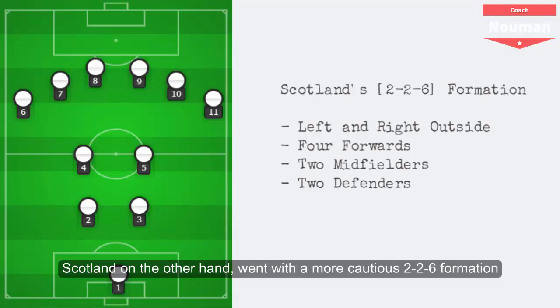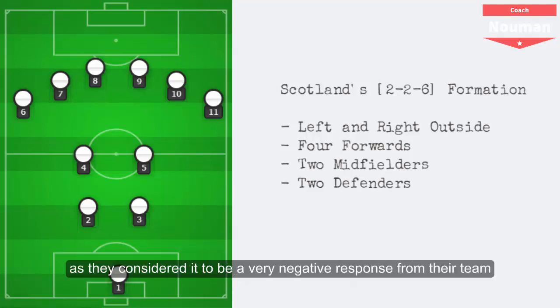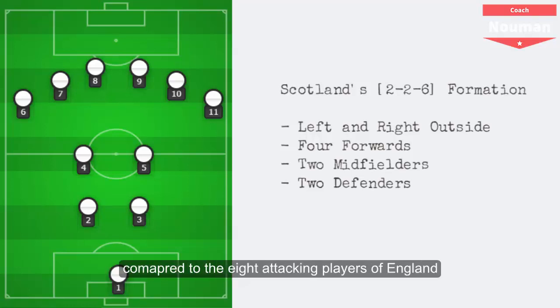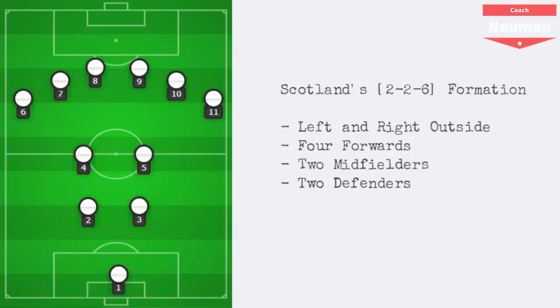Scotland on the other hand went with a more cautious 2-6 formation, which did not go well with the Scottish fans as they considered it a very negative response compared to the eight attacking players of England. But Scotland did surprise England, as unlike the English players, Scotland tried to focus more on passing than running with the ball.